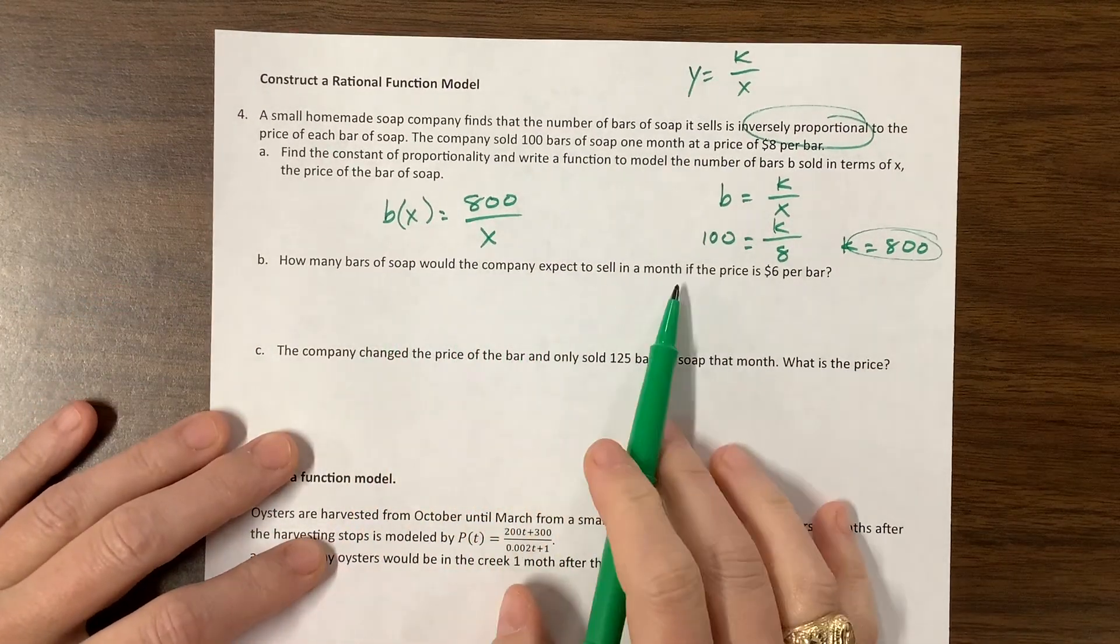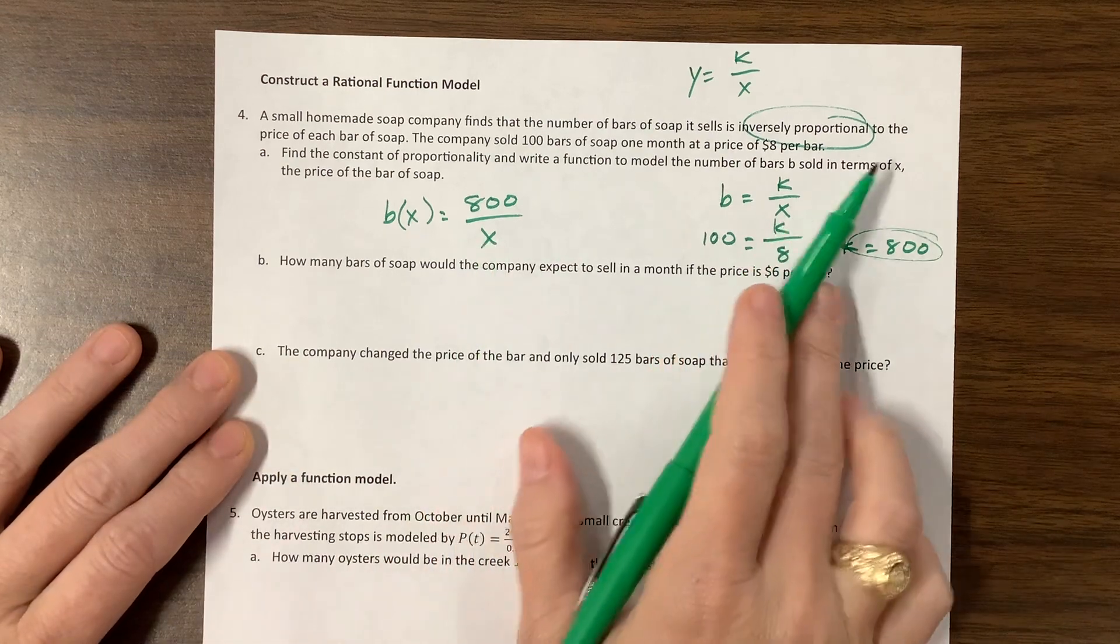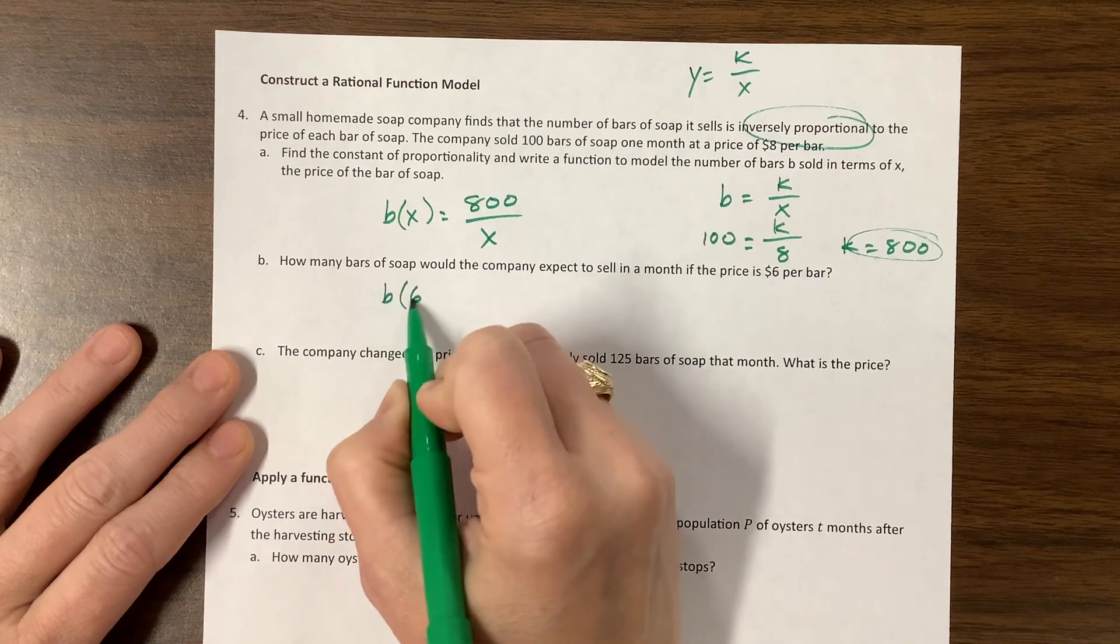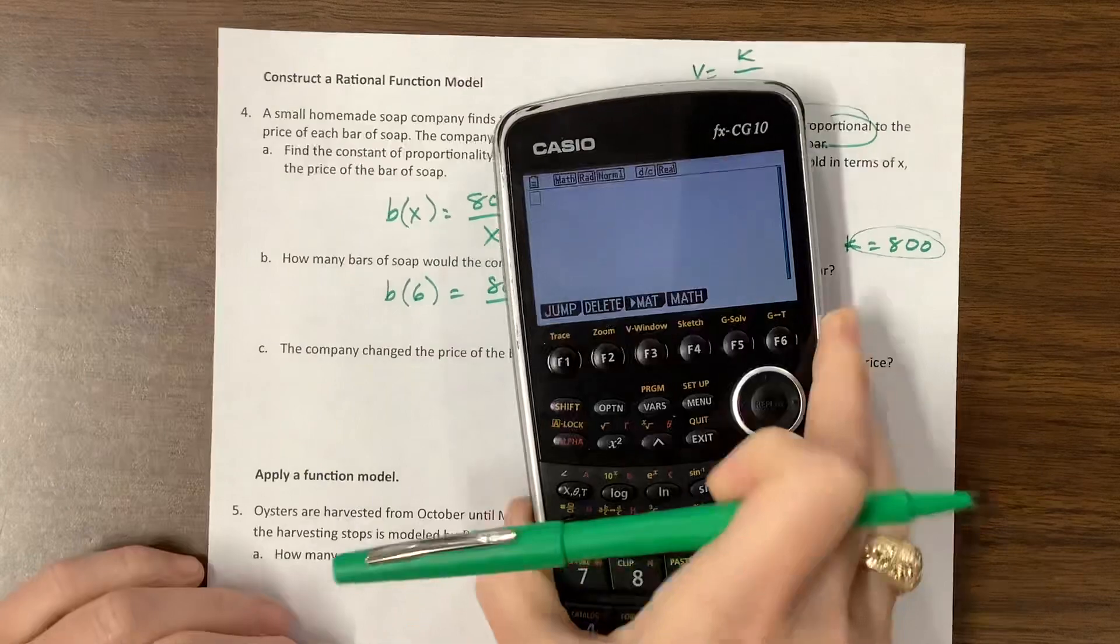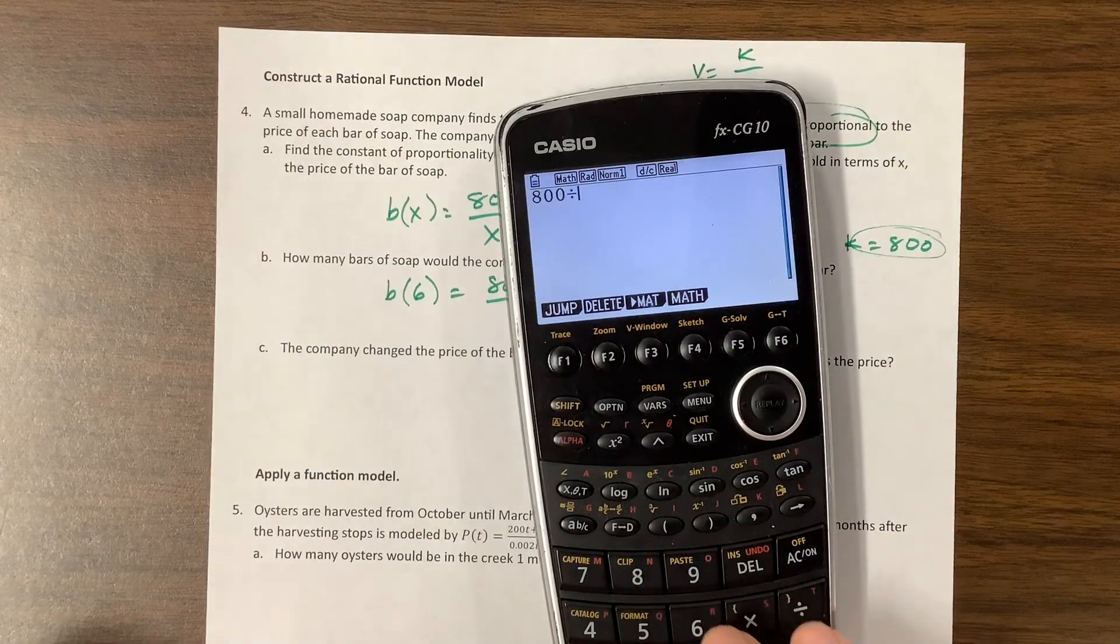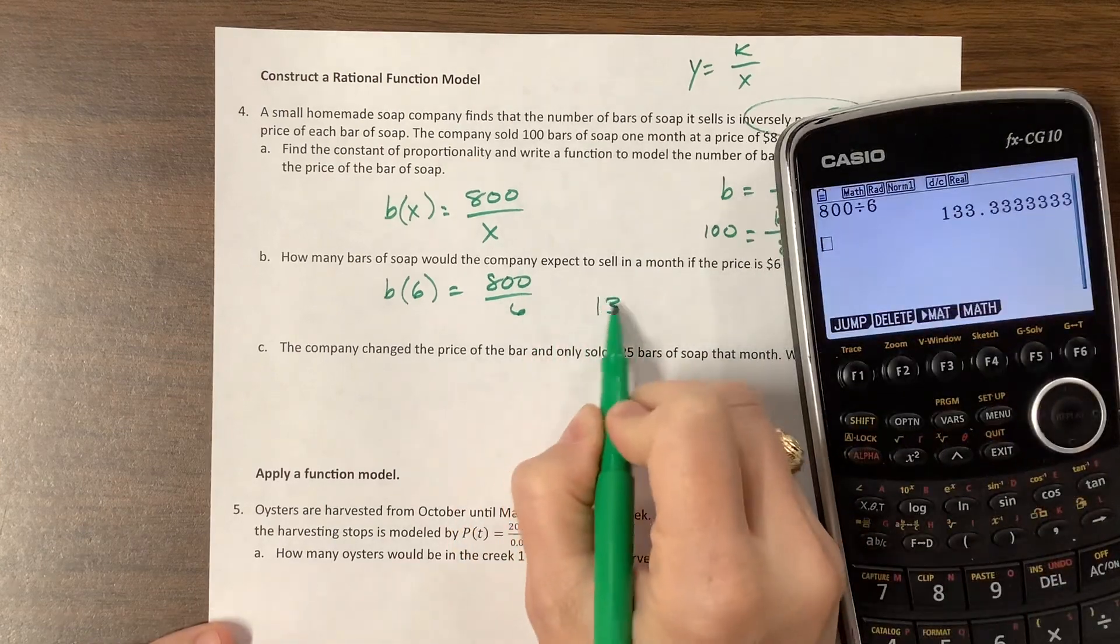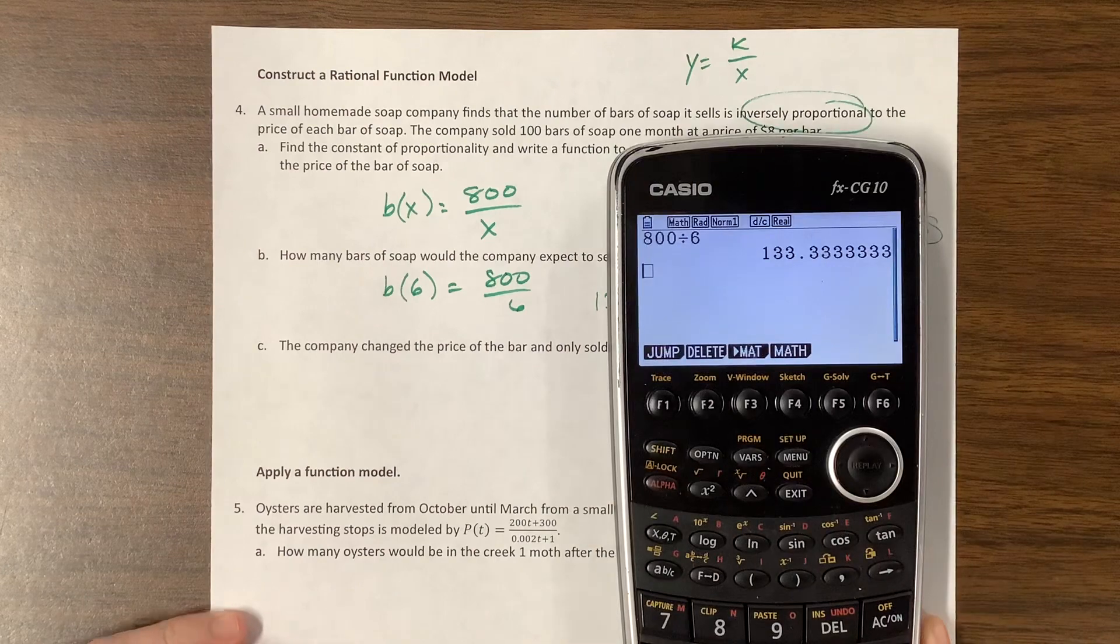Okay, so how many bars of the soap would the company expect to sell in a month if the price is $6 per bar? Price is x. So basically I'm looking for b of 6 is equal to 800 over 6. It's not a perfect number, or it's not a whole number. Okay, so how many did we sell? I would argue we sold 133 bars because you can't sell a fraction of a bar, I would imagine. I don't know. I don't sell soap.